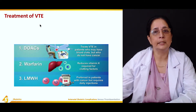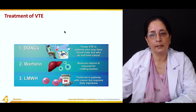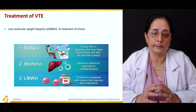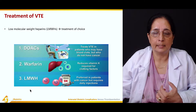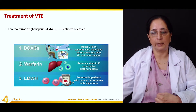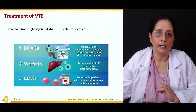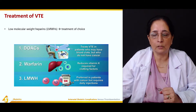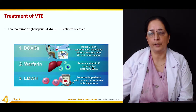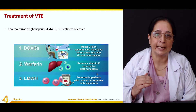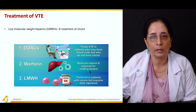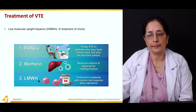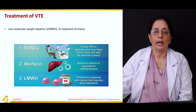Treatment of venous thromboembolism: low molecular weight heparin is the treatment of choice, administered by injection, and can cause dislodging of the blood clot. Direct oral anticoagulants can also be used. Warfarin reduces vitamin K levels, which are required by different clotting factors, thereby preventing clotting. Low molecular weight heparin is especially preferred in patients with cancer and requires daily injections.